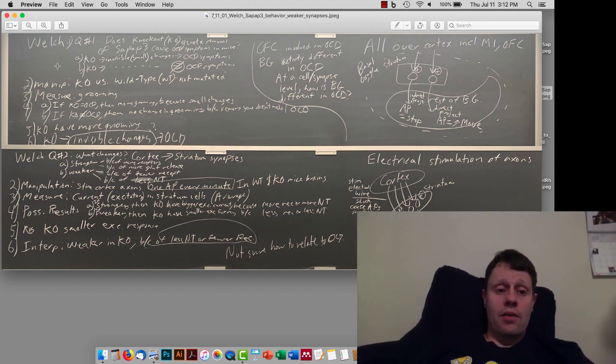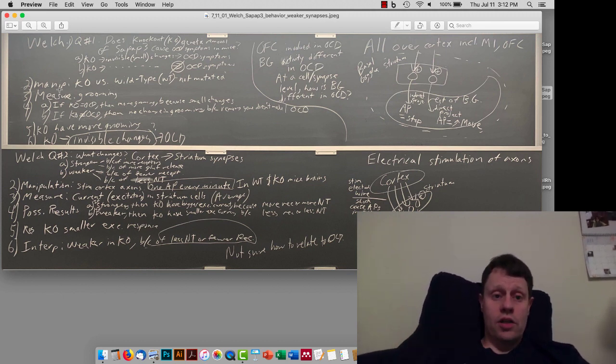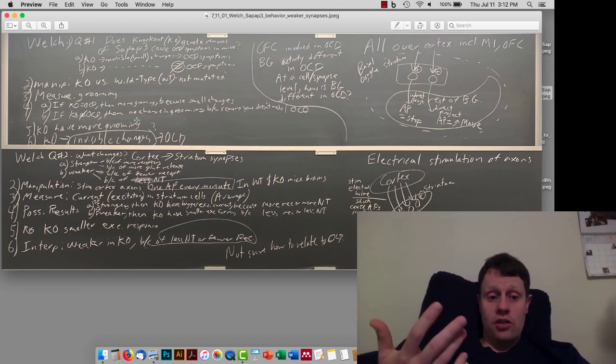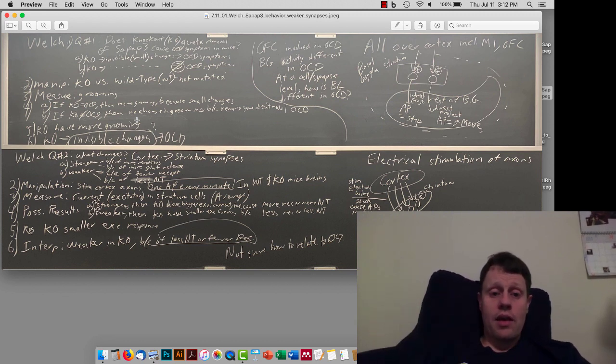In fact, what they found is that with this particular mutation where they knock out or remove an entire gene, in this case the gene that codes for something called SAPAP3, which is found in many synapses, what they find is that something changes in the brain that causes behavioral changes that they interpret to be like OCD, in particular, increased grooming, increased spontaneous grooming.